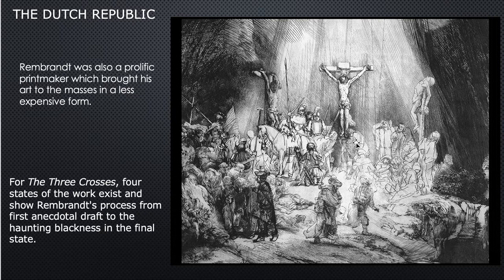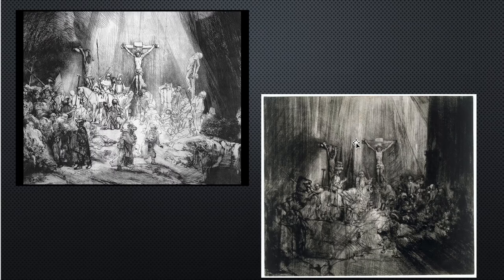What you have with Rembrandt is many different states of a print — it's the same plate he was working with, but he printed them at different times after reworking. This is the Three Crosses. There were four states that exist that have come down to us, showing Rembrandt's process from the first anecdotal draft to the haunting blackness in the final state. You can see how he reworked it quite a bit, changed it, and added a lot more darkness. This gives us a glimpse into the method of etching and Rembrandt's process in particular.